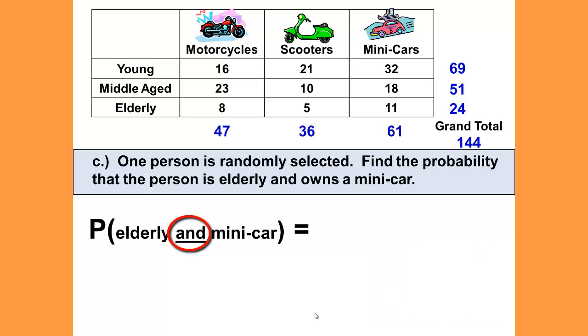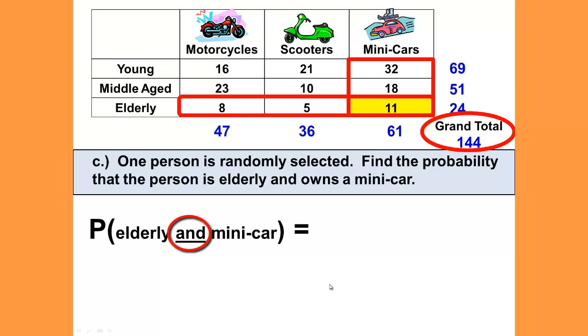We are looking for elderly and mini-cars. Let's highlight and shade the groups that we're looking at. So we have the elderly and the mini-cars. Remember what and means. And, as from a previous video you should remember, is the intersection of two events—where they both cross or where they both overlap. And the overlap here would be the 11 adults that both are elderly and own a mini-car, and that would be out of our grand total of 144, which would give us 11 divided by 144, or 0.0764.